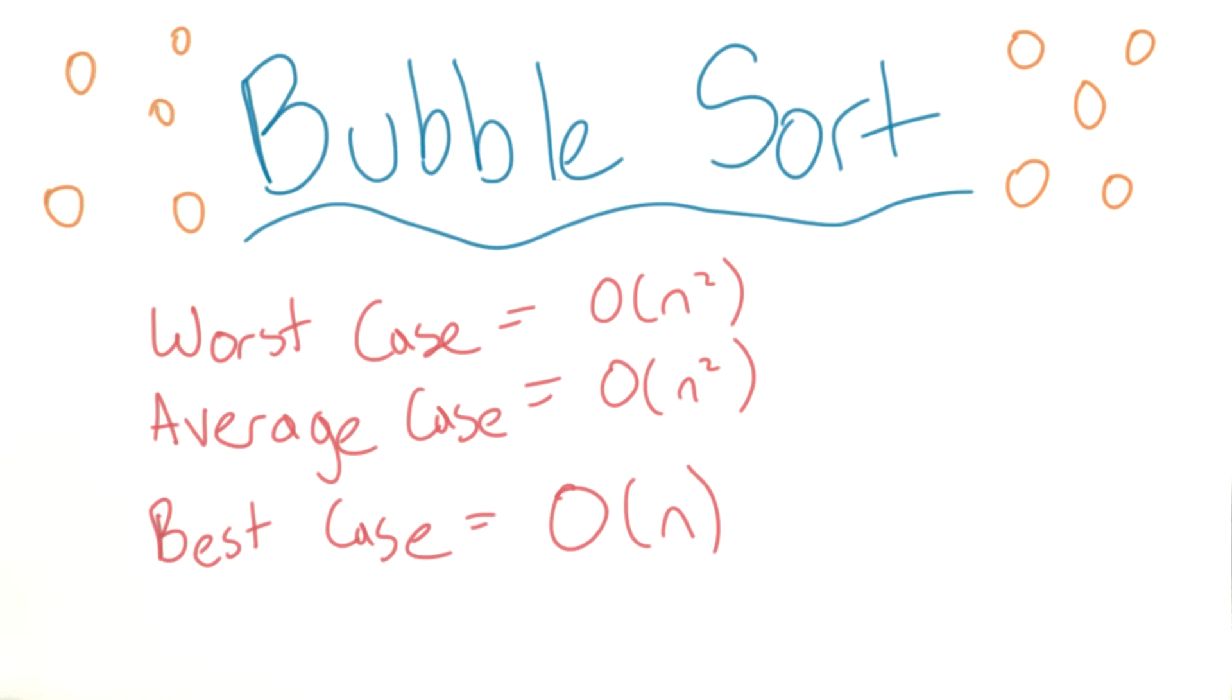The best case would either be that the array was already sorted, in which we can just go through it once, see that it's sorted and not have to do anything else. Or if there's only one number that needs to be bubbled up to a new place in the array.